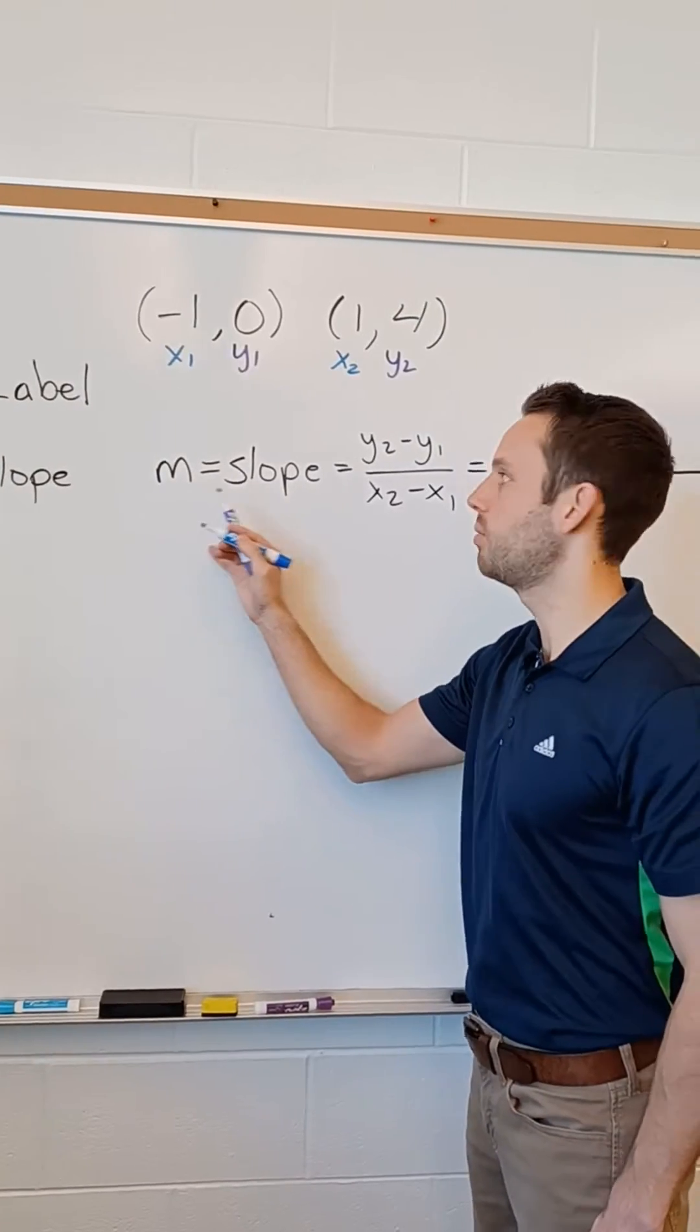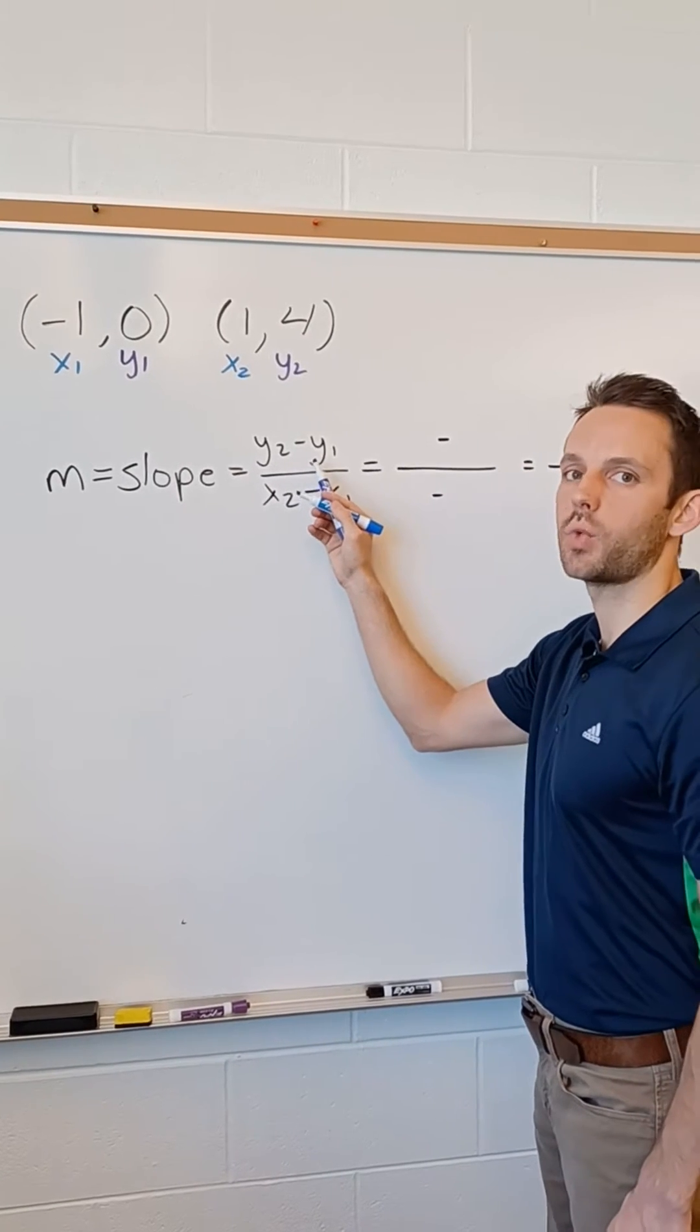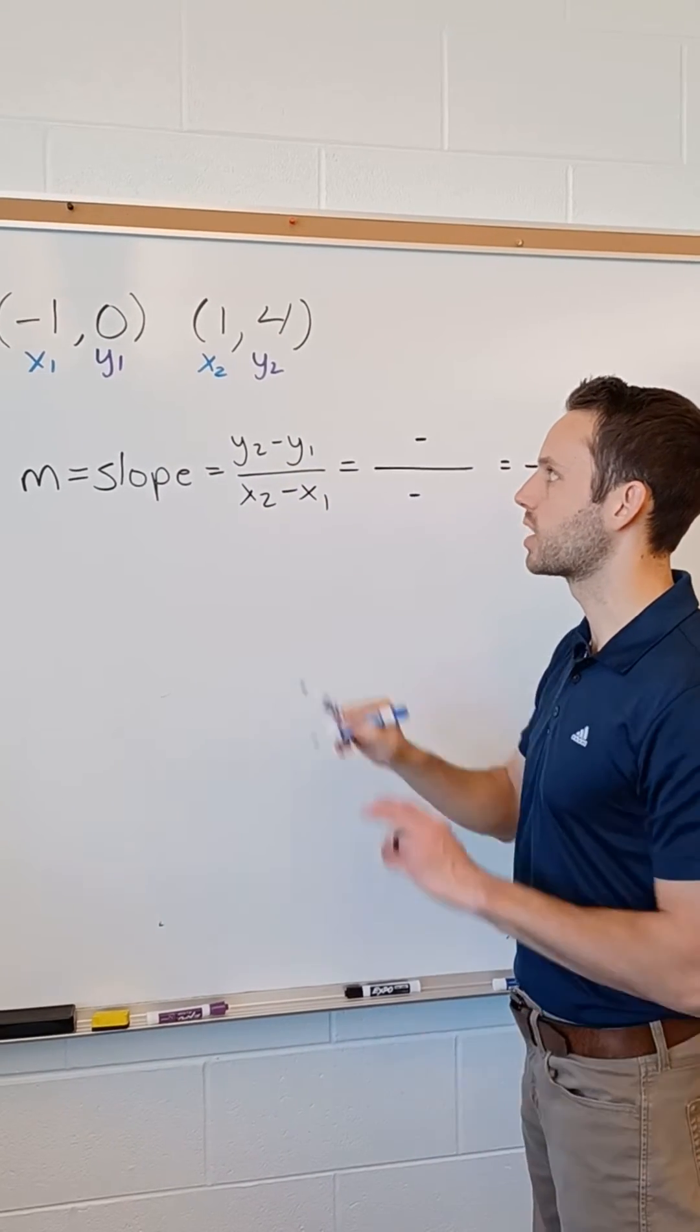Step two, find your slope. m is equal to the slope, which is your rise over your run. y2 minus y1 in the top, x2 minus x1 in the bottom.